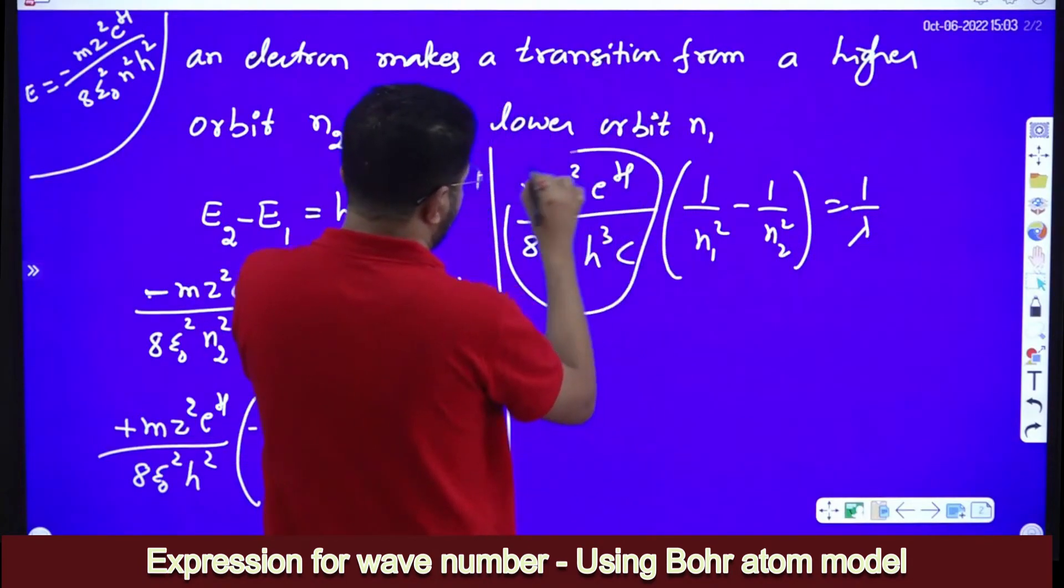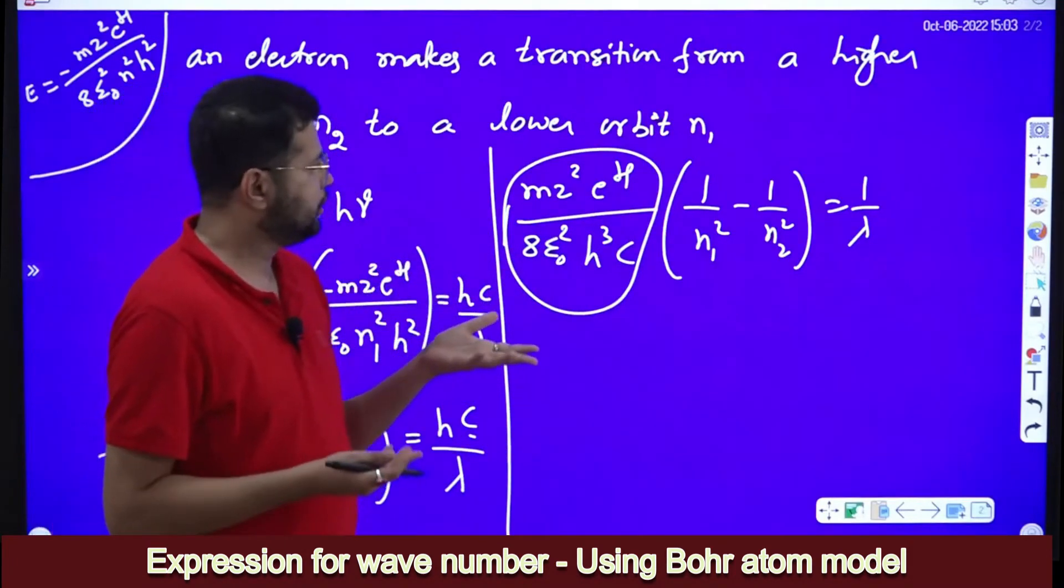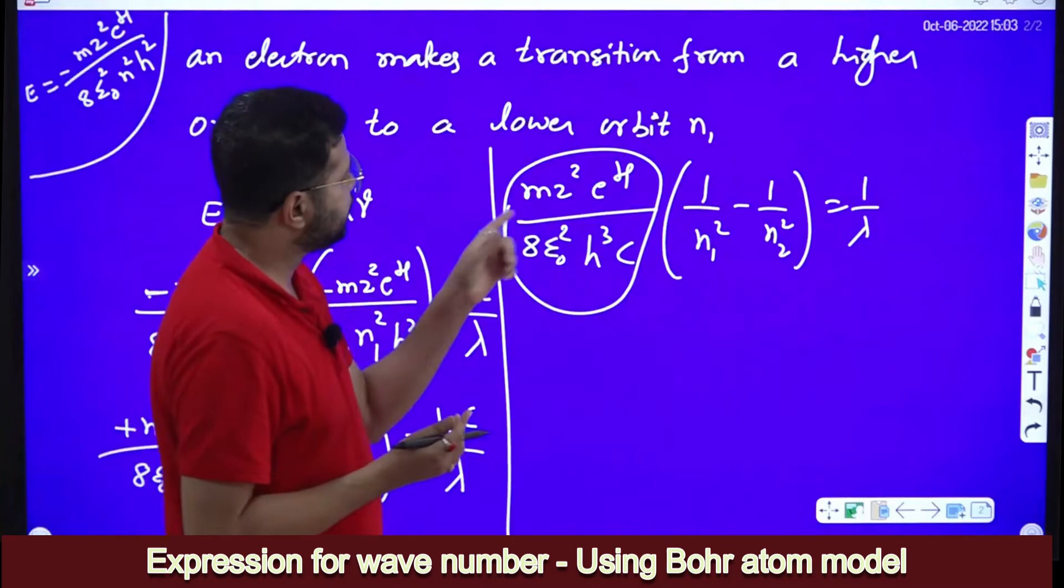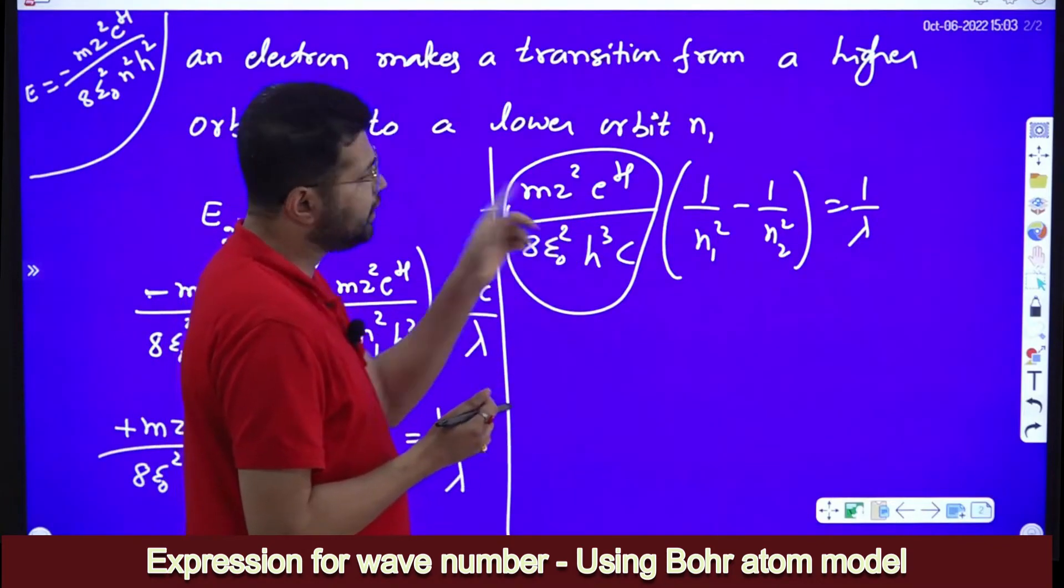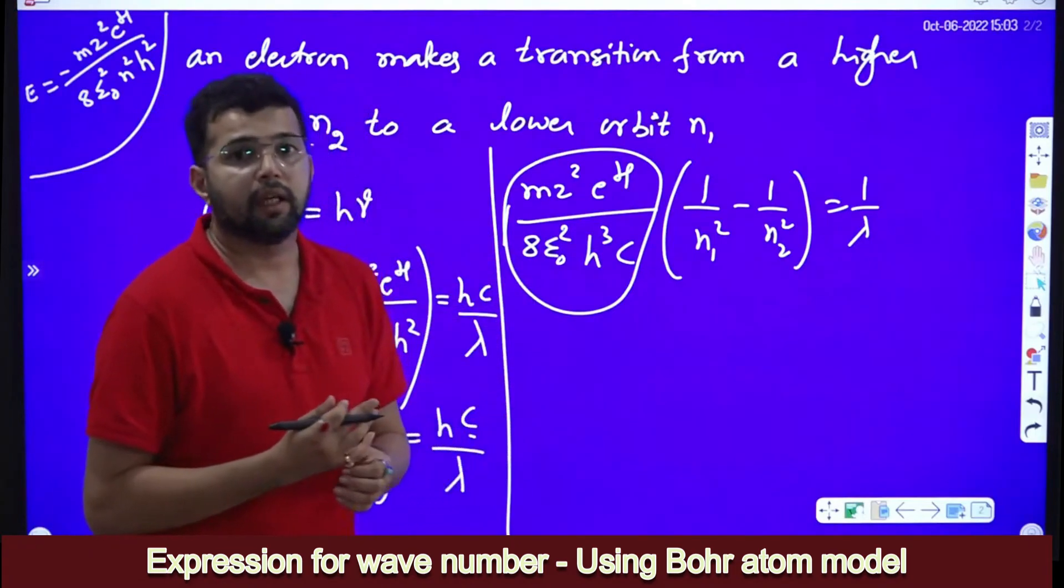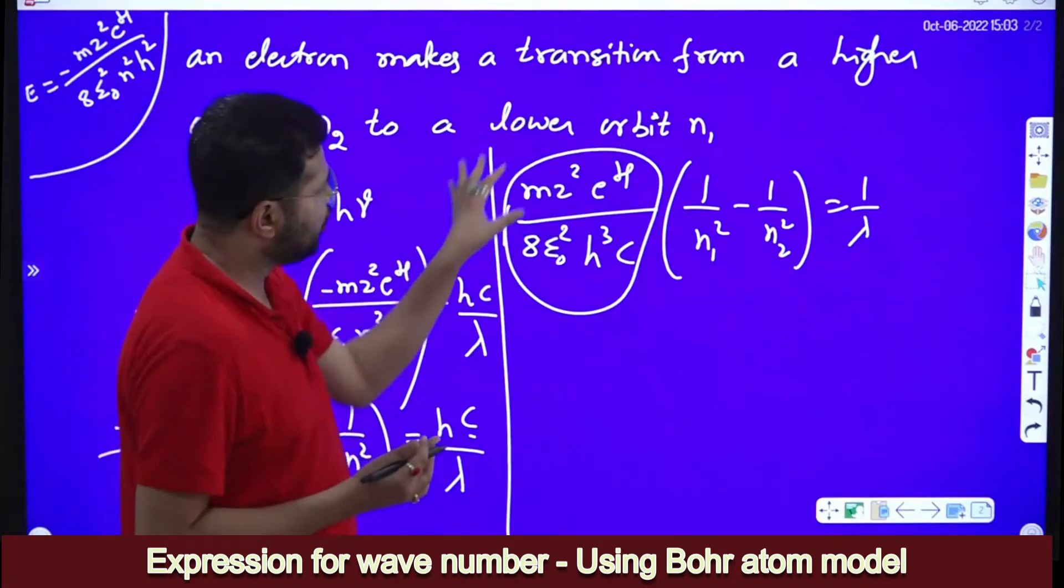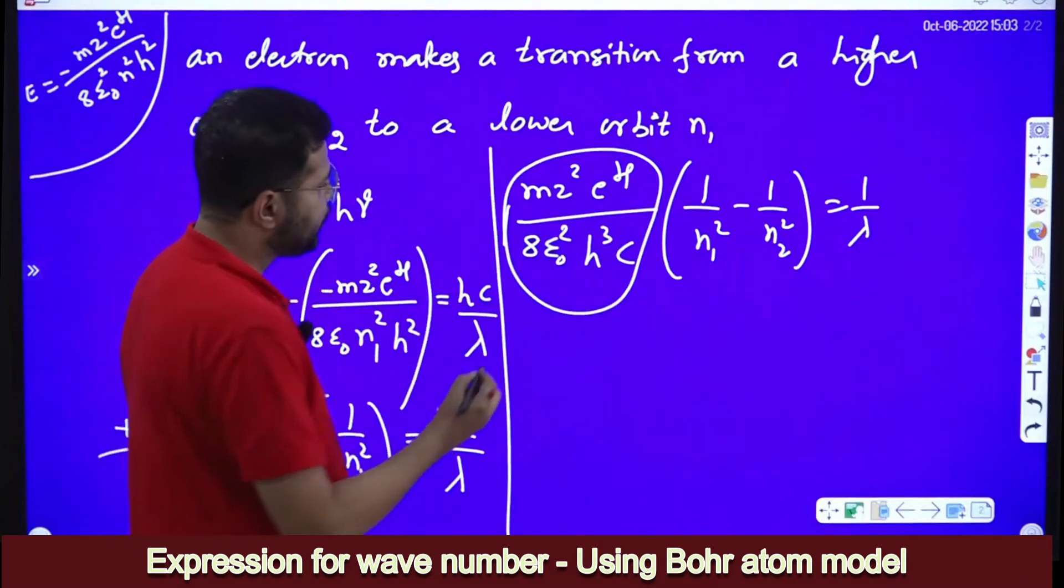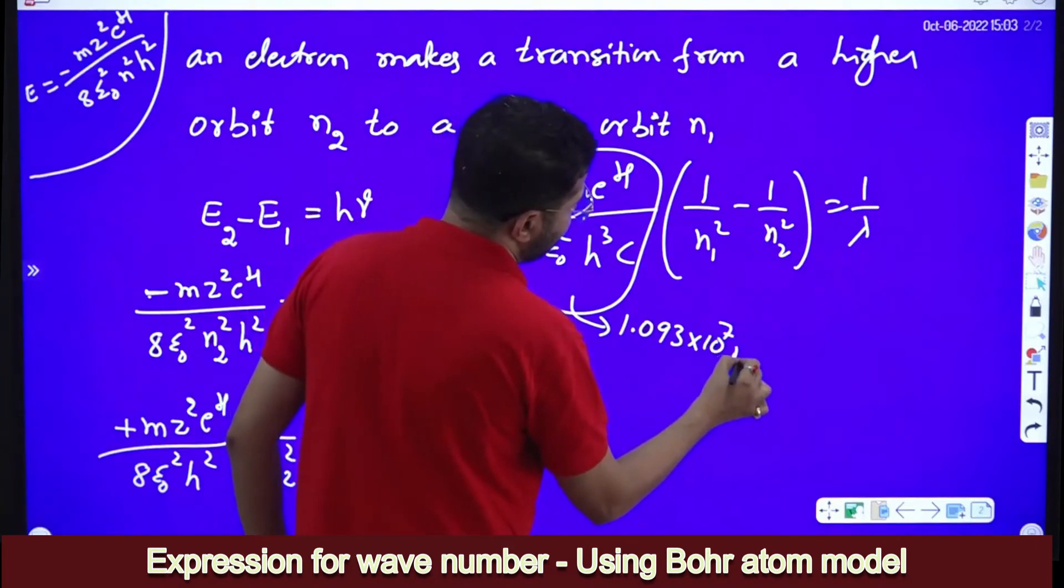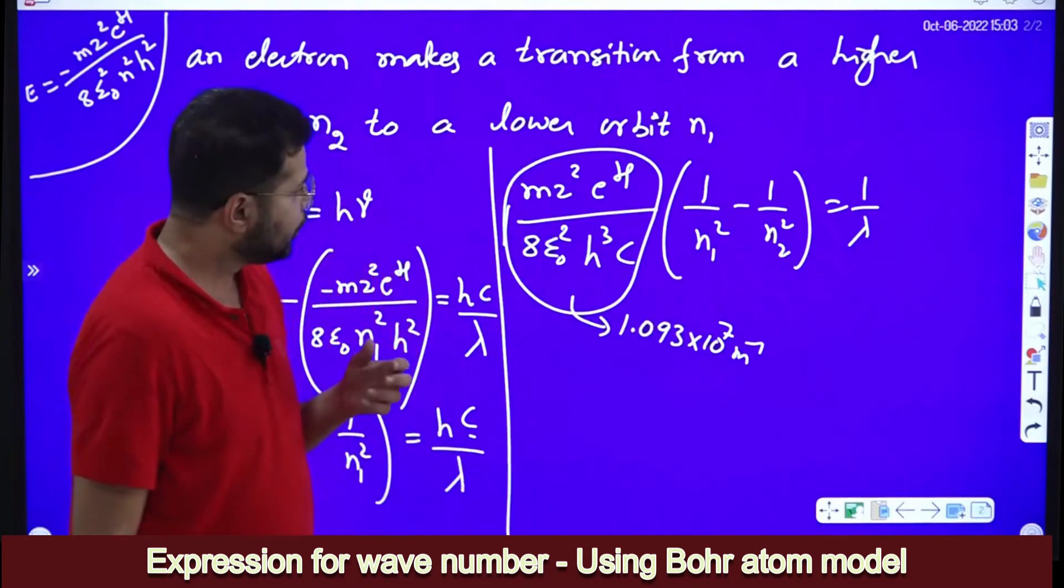Now, if you observe here, M is mass of electron, Z is atomic number, it is applicable only to hydrogen or hydrogen like atoms. E is charge of an electron, epsilon naught is constant, H is constant, C is constant. If you take Z equal to 1 for hydrogen atom, if you substitute all the values here, you are going to get a value something very close to 1.093 into 10 to the power 7 per meter, which is very close to the value of Rydberg's constant. So, therefore, this can be replaced by R.